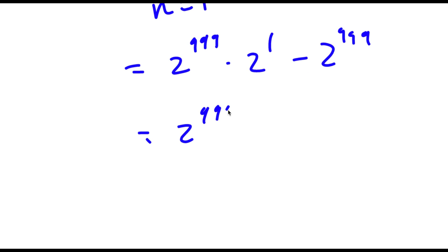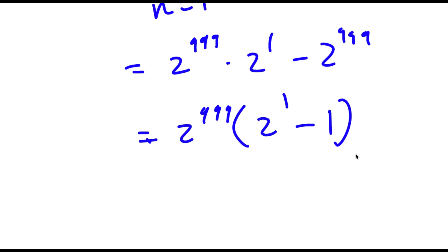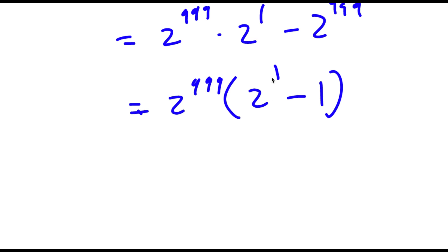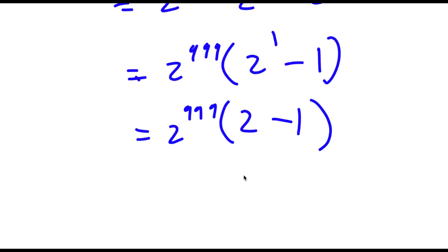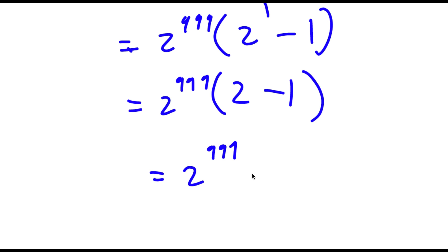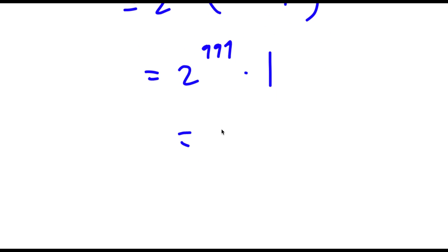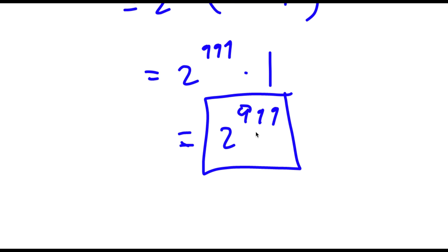So now I have 2 to the power of 999 times — 2 to the power of 999 times 2 to the power of 1 divided by 2 to the power of 999 is simply going to be 2 to the power of 1. Now this minus 2 to the power of 999 divided by 2 to the power of 999 is simply 1. So now 2 to the power of 999 times 2 minus 1 — now 2 minus 1 is simply going to equal 1, so I have 2 to the power of 999 times 1, and this is equal to simply 2 to the power of 999, because anything times 1 is itself. So 2 to the power of 999 is our answer.